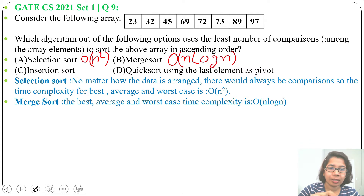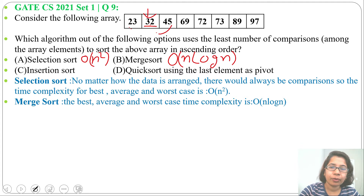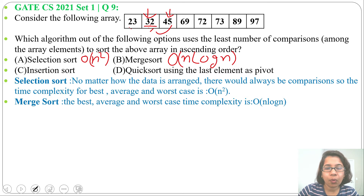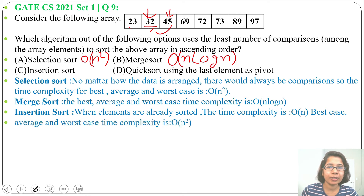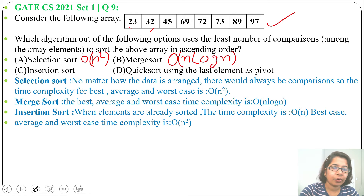Next is insertion sort. In insertion sort, we compare right to left and find the appropriate position to insert. For example, comparing 32 with 23 — 32 is greater so it stays at its own position. Then 45 compares with 32 — 45 is greater so it stays at its own position. We are doing just one comparison per element. In best case, if the array is already sorted, we do just one comparison for every element, so best case is O(n), while average and worst case are O(n²). So for a sorted array, the number of comparisons is O(n).